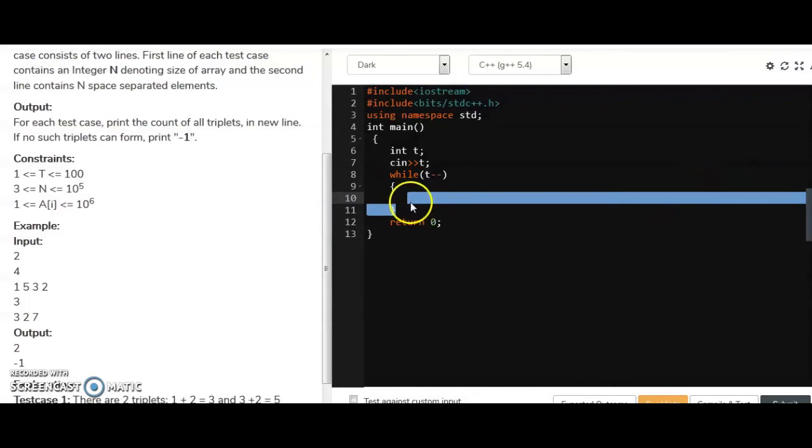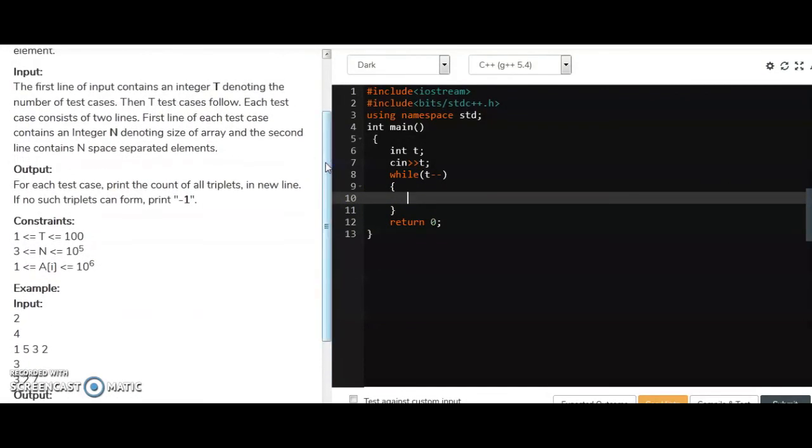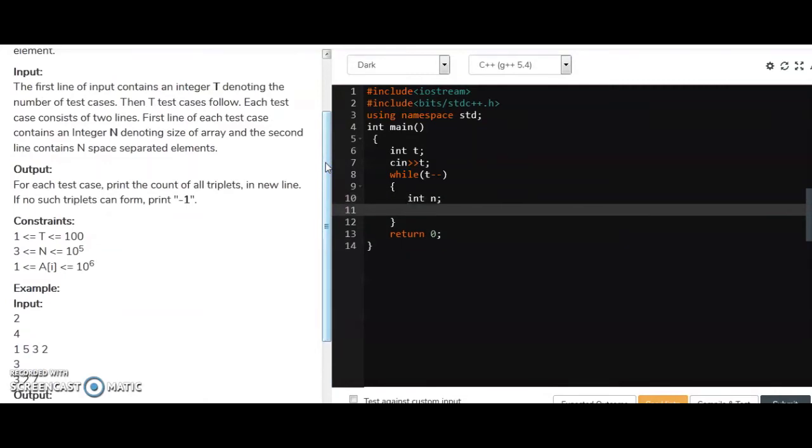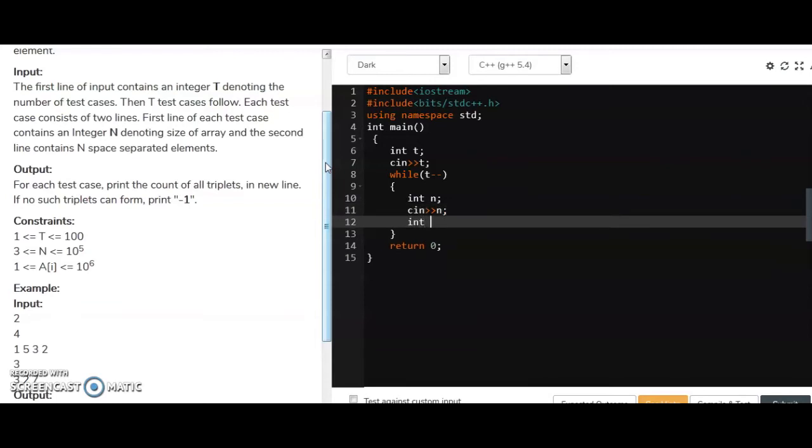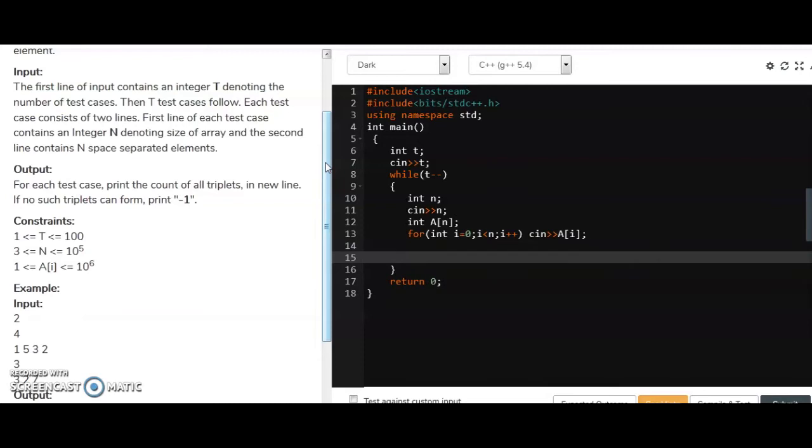So what we have to take initially as input, let's see in the input part. We have to take an n as an input. So int n and also defining an array of n integers and taking the input for the array. Right? Now, again, first of all, sort the array first.